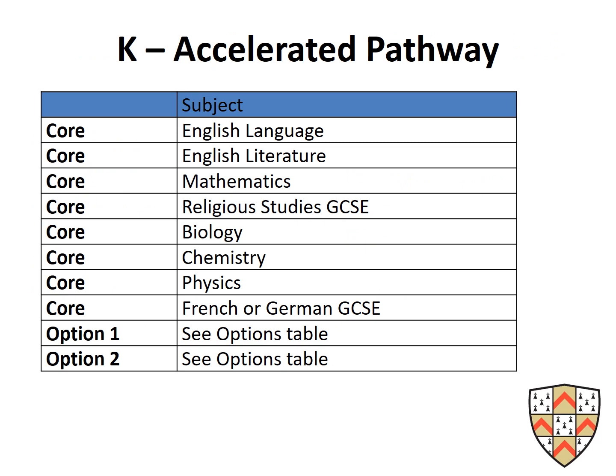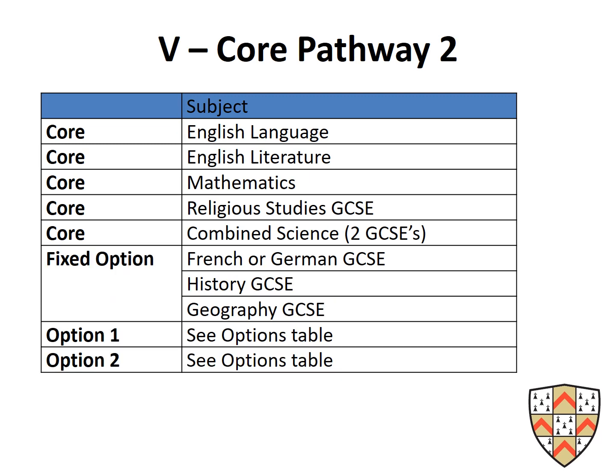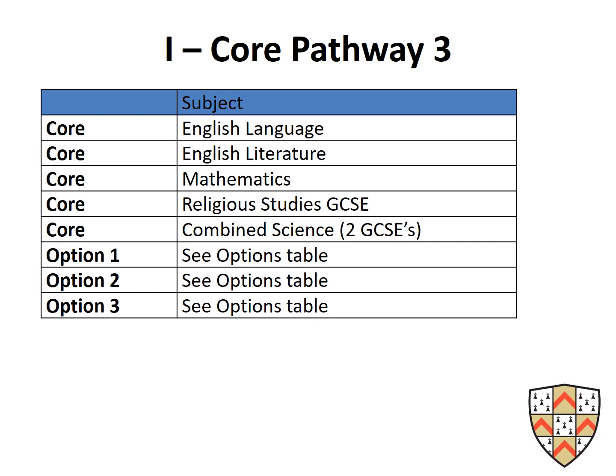On the K pathway, students do single sciences — biology, chemistry and physics — plus a language and 2 free options. On the E pathway, they do combined science, equating to 2 GCSEs, plus a language and 2 further options. On the V pathway, they still do combined science with 2 GCSEs but have a fixed option from French, German, History or Geography, then 2 further options. On the I pathway, there are no restrictions on options — SEND students are very often on this pathway — giving them complete flexibility over all 3 options.